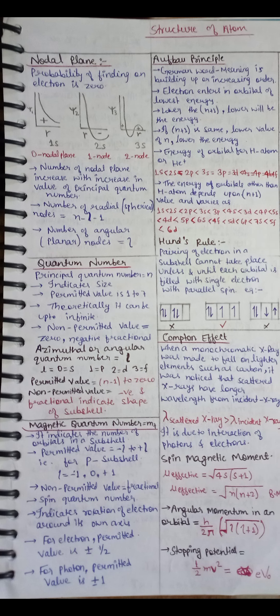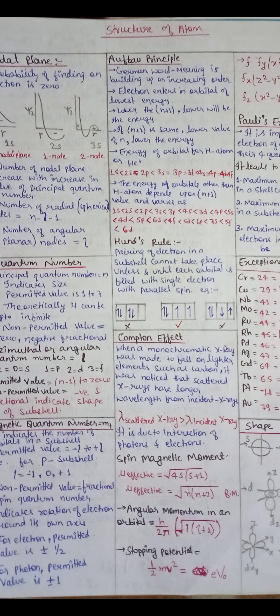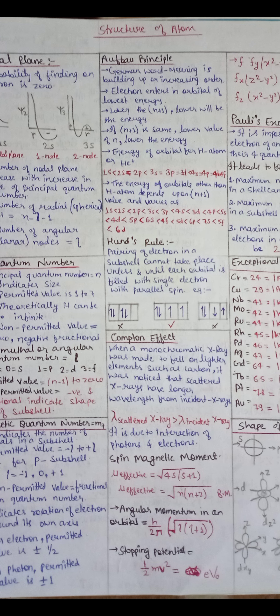Nodal plane. Quantum number. Magnetic quantum number. And Pauli exclusion principle. Hund's rule is given.